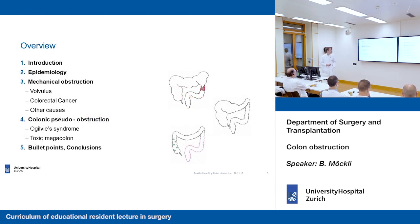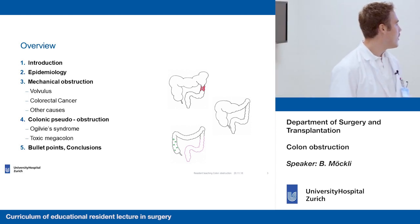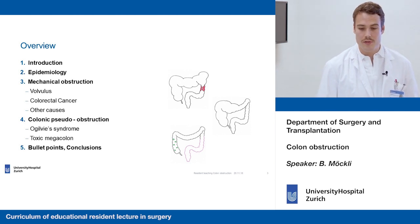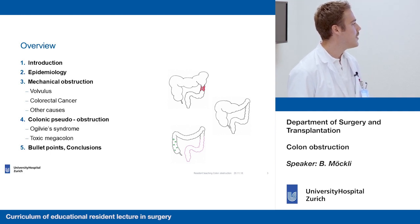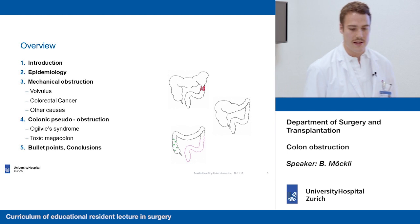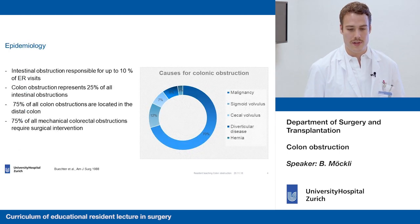A quick overview of the presentation: we'll start out with some numbers about the epidemiology, then go into mechanical obstructions with colorectal obstruction and different kinds of volvulus, represented by malignant colorectal obstruction. Then we'll go into pseudoobstructions with Ogilvie syndrome and toxic megacolon of C. diff colitis and ulcerative colitis, and round up with conclusions and bullet points.